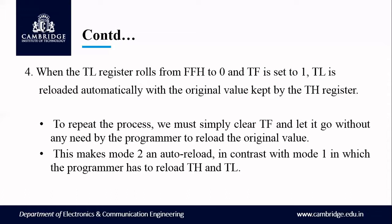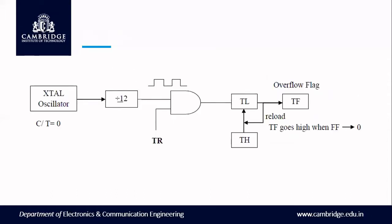This makes mode 2 auto reload, in contrast with mode 1 in which a program has to reload the TH and TL values. In mode 1, control must return to a reload instruction. In mode 2, no need to reload a value — by default, whatever initial value is loaded into TH will be loaded into TL. Just clear TF to 0 and it repeats again. Also important: the C/T-bar value in TMOD should be 0 for timer operation, so the frequency will be divided by 12 to generate the timer frequency.